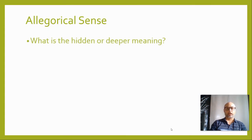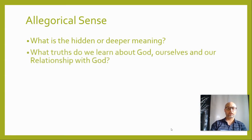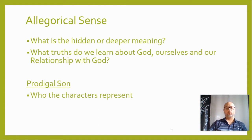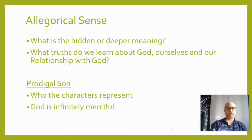First of all, the allegorical sense. In this, we're looking for the hidden or the deeper meaning within the passage — what is it trying to teach us, what truths do we learn about God, about ourselves as humans, about our relationship with God? So in the story of the prodigal son, where you have the father and the two sons, the father represents God, the younger son who leaves represents people who are sinful and who leave God, and the older son who stays represents people who are faithful to God. The deeper meaning within the entire parable is that God is infinitely merciful and will always take us back if we ask for forgiveness.